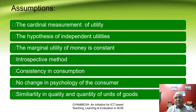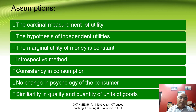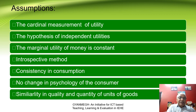Third, marginal utility of money is constant. The marginal utility of money is assumed constant because if there is any change in the price of goods, the value of money may increase or decline. Marshall assumed it as constant because without this assumption, he cannot measure this law. Fourth, the Introspective method — it refers to the psychological behaviour of the consumer, what he is thinking about the consumption of goods, and he compares his consumption to other members of society. Consumption should be consistent, with no change in psychology, and similarity in quality and quantity of units of goods.